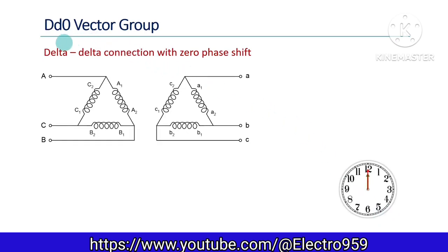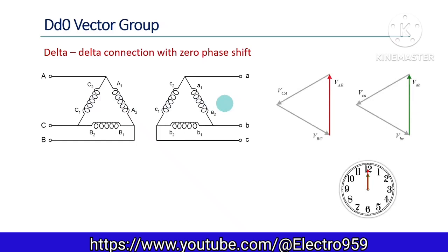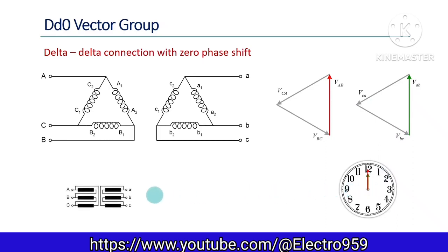The next type is the DD0 vector group. It has a delta-delta connection, meaning both primary and secondary windings are delta connected. In the phasor diagram, line voltages are in phase with the corresponding primary side voltages. The phasor position of line voltage VAB is considered for phase angle representation. Since there is no phase difference between the primary and secondary, the clock position corresponding to zero hours applies here as well. We can have the simplified connection diagram and also the displacement diagram.